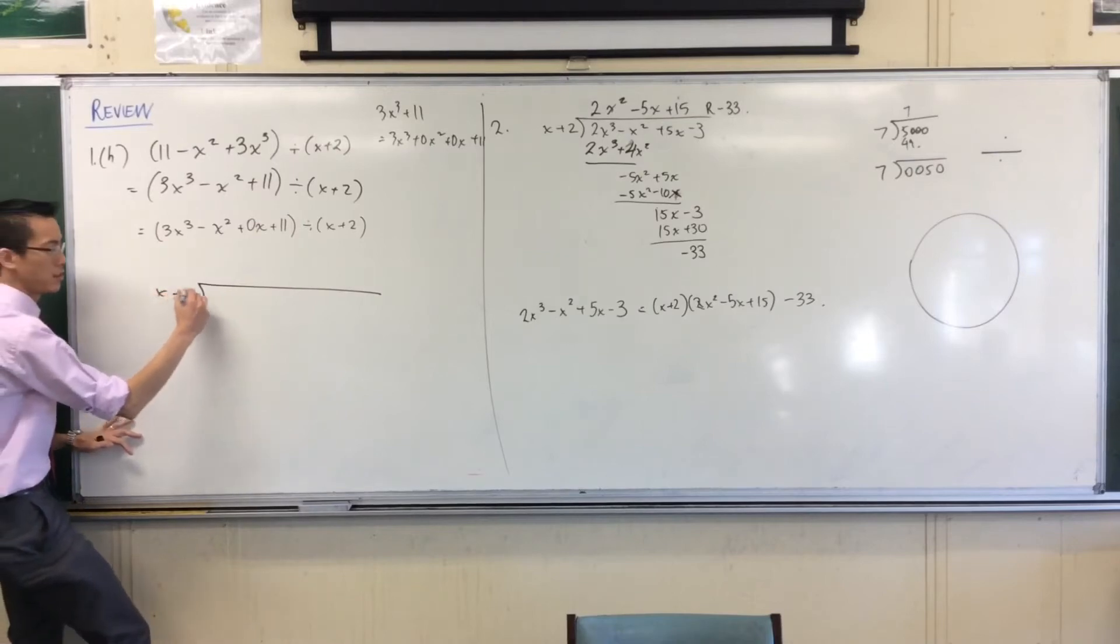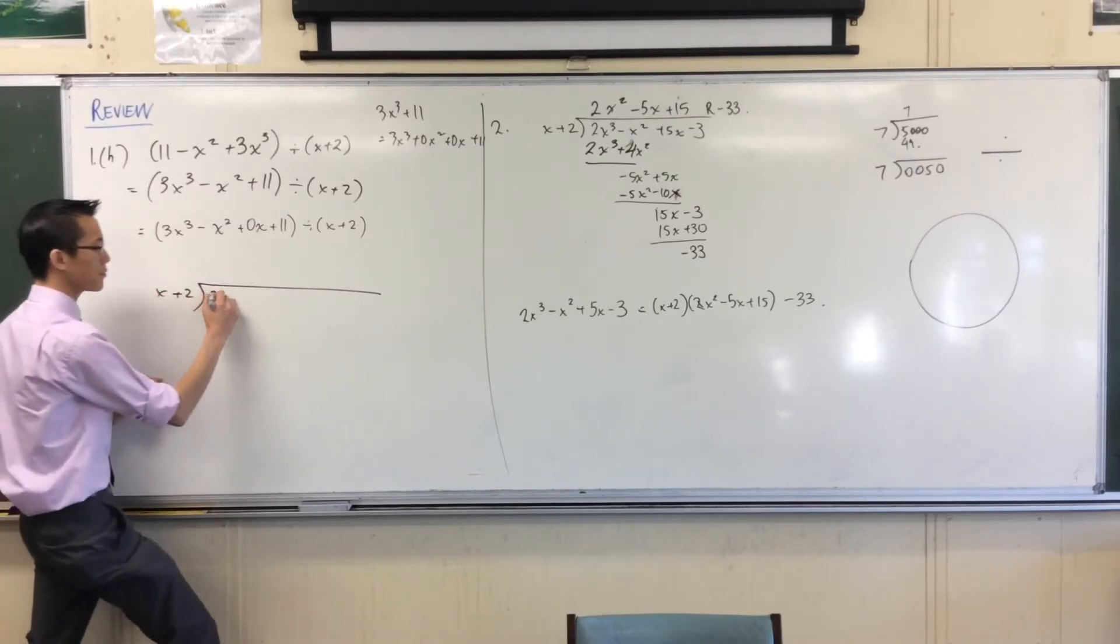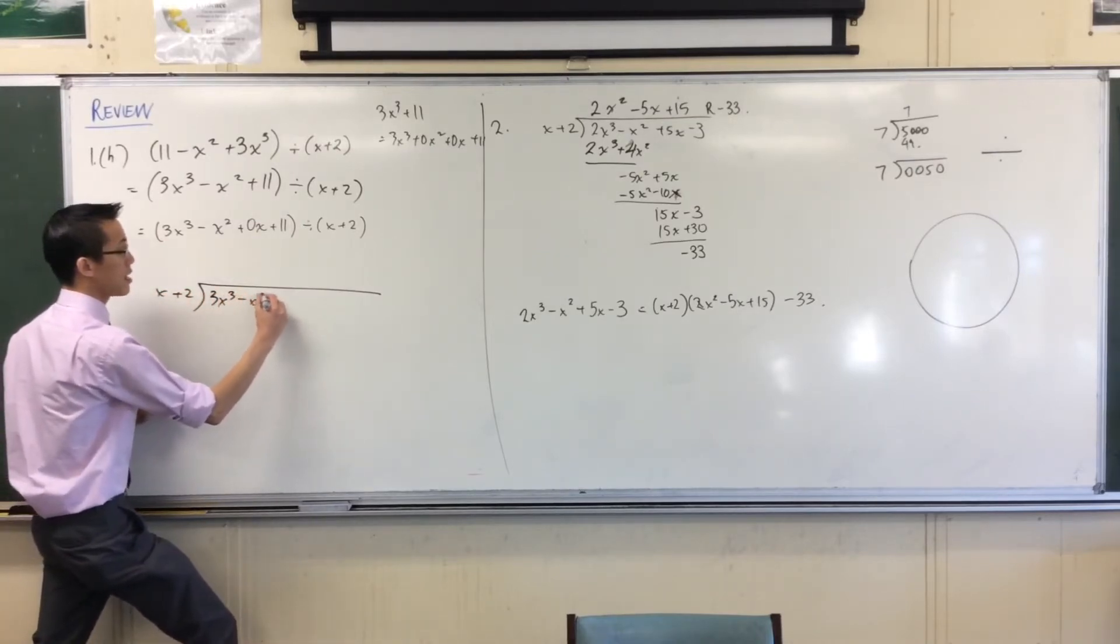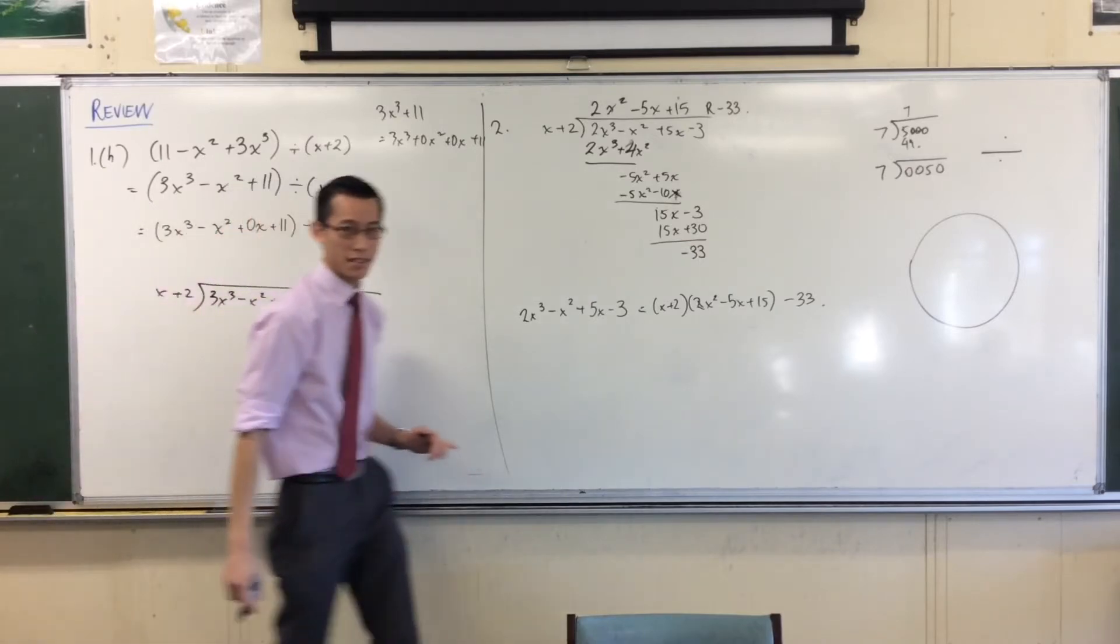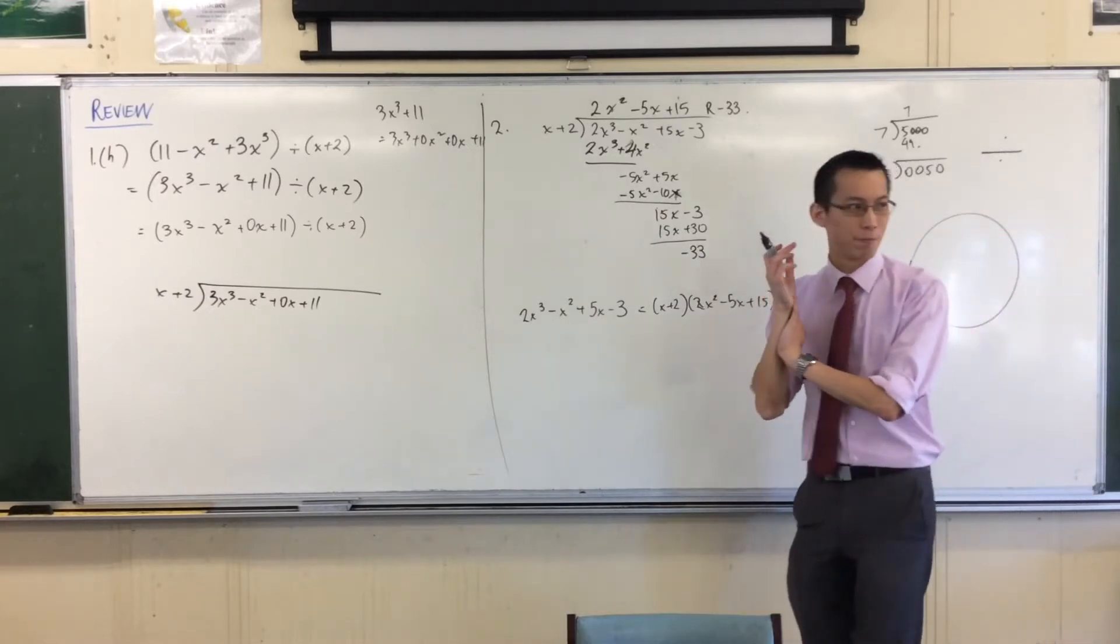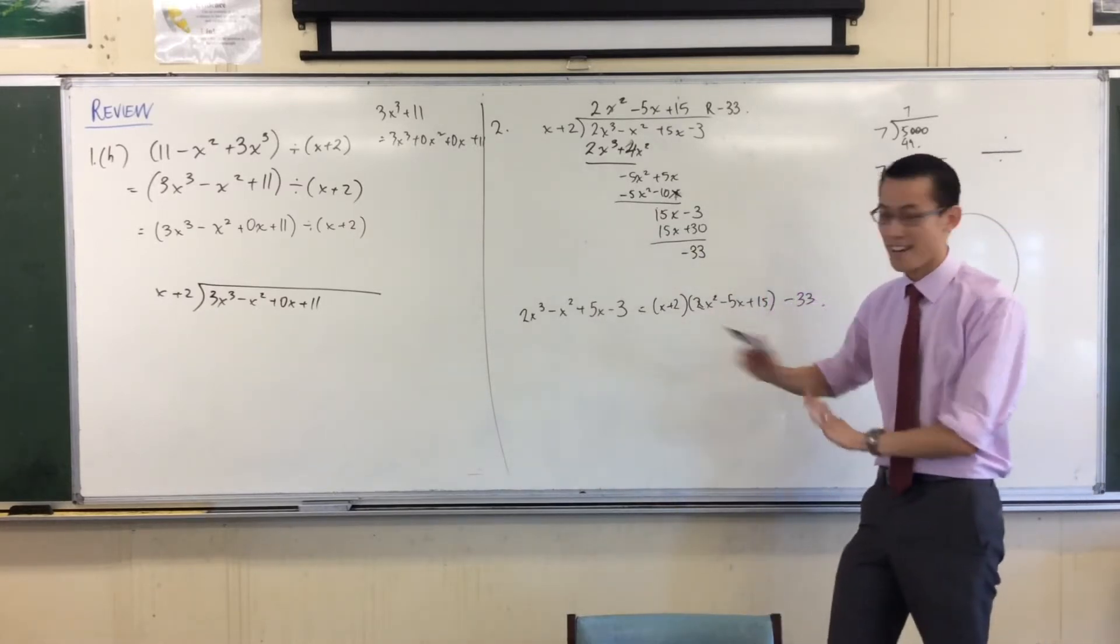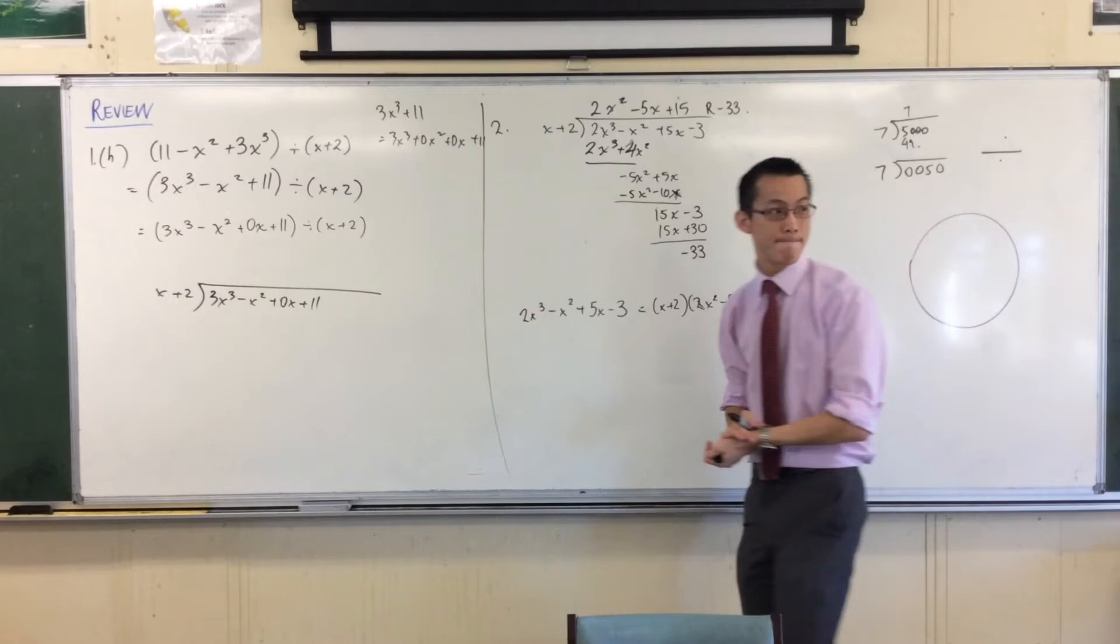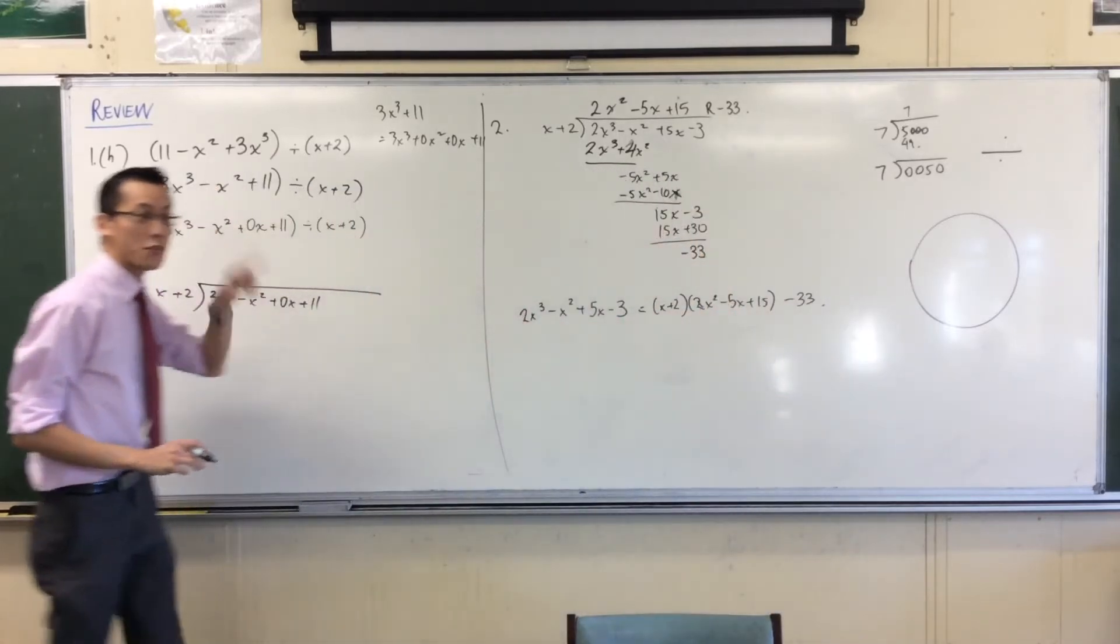So here we go. I've got my x plus 2, my divisor at the front. And here comes the dividend. How do I begin? Tell me what's, someone hasn't said anything yet. We've got an example just now. What will be my first step? Say it again. 3x squared.